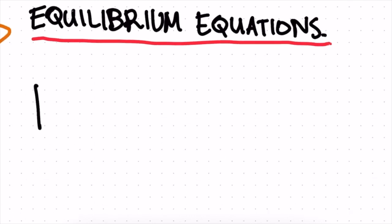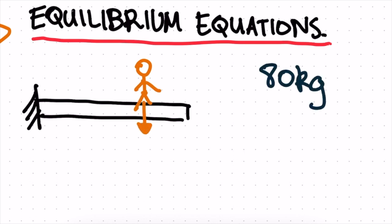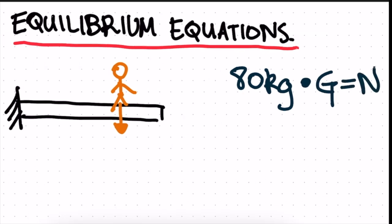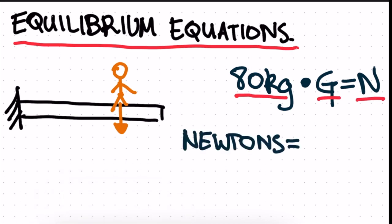Let's say we have a fixed beam and we have a person standing on our beam. This person has a weight — let's say this person weighs 80 kilograms. If we multiply this by gravity, we get newtons. Gravity is a constant, which is 9.81 meters per second squared. If we multiply the mass by the gravity, we get newtons. Newtons is the unit we give to force.